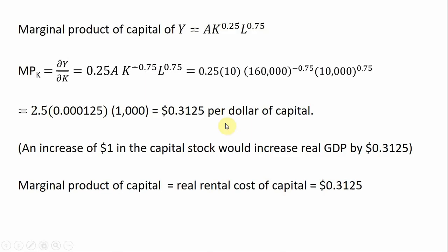The next step is to get the marginal product of capital from our aggregate production function. We take a partial derivative with respect to K: bring down the 0.25 in front, then apply 0.25 minus 1, leaving K raised to the minus 0.75 power. Evaluating at A equals 10, K equals 160,000, and L equals 10,000, we get the marginal product of capital equal to 0.3125 — a little over $0.31. In equilibrium, the real rental cost of capital equals the marginal product of capital, so it is also approximately $0.31.